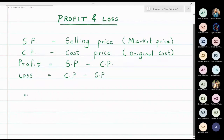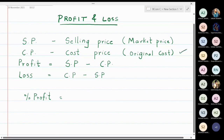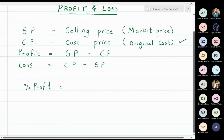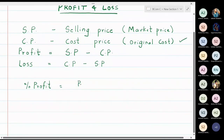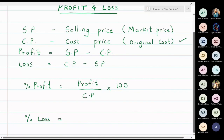Any profit or loss is always taken into consideration with respect to the original cost. The formula for percentage profit is: profit divided by cost price, multiplied by 100. The formula for percentage loss is: loss divided by cost price, multiplied by 100. Cost price is important because it is the original price of the article.